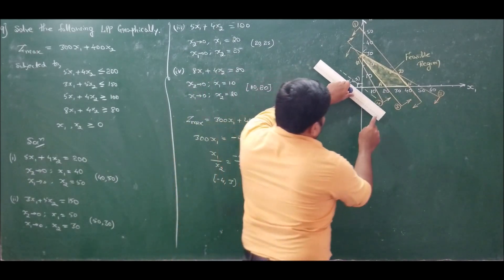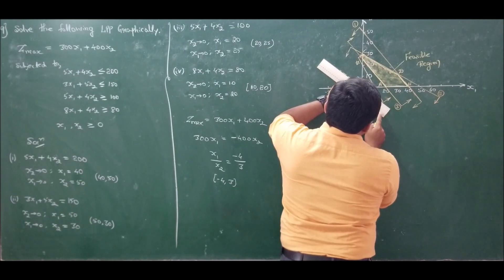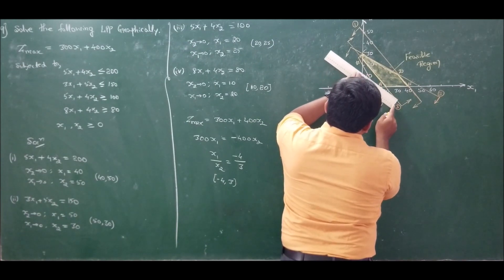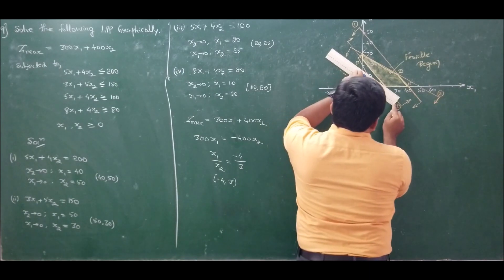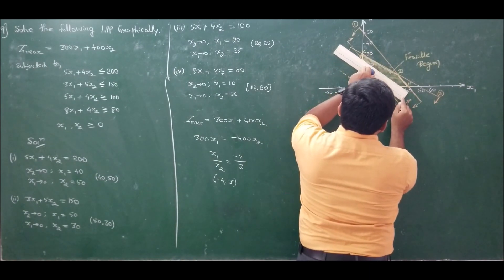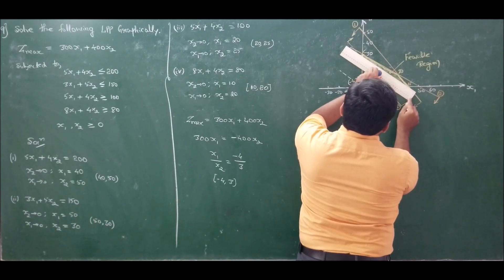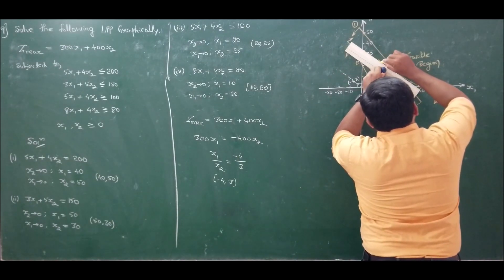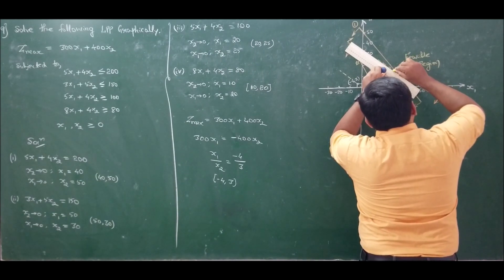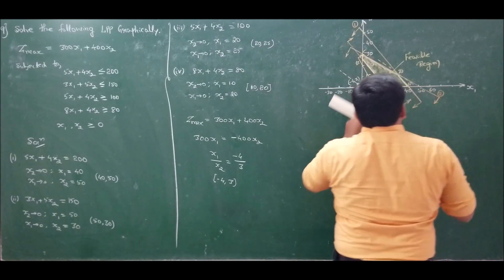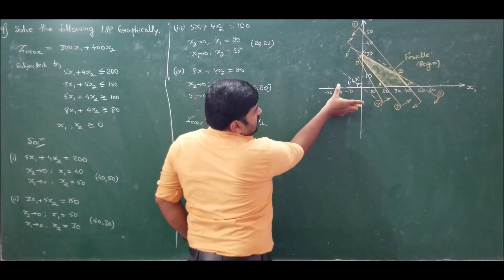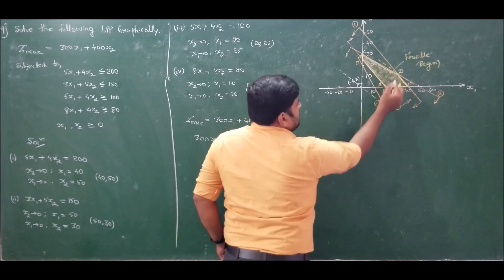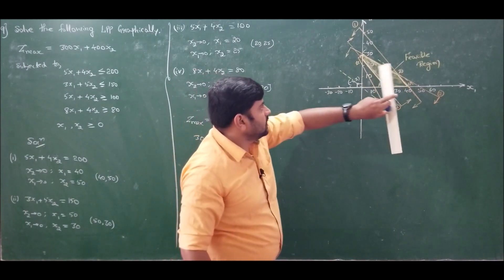Now slide this line to identify the farthest salient point it touches. Sliding it, we first reach A, then B, then E, then C, and finally D. D is the farthest corner for the slant line, so D is the optimal solution.